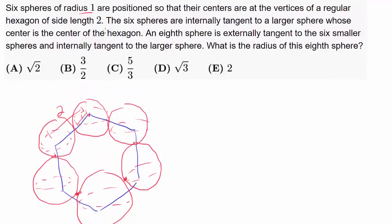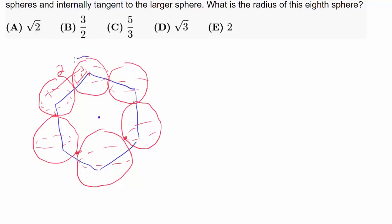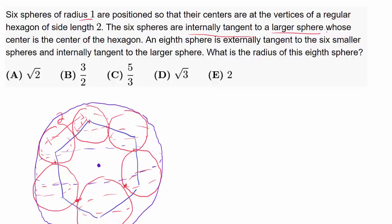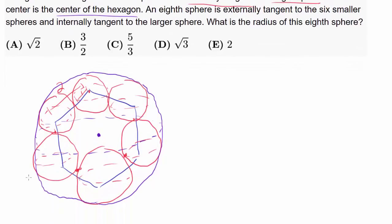The 6 spheres are internally tangent to a larger sphere whose center is at the center of the hexagon. So we have a larger sphere — let me label that — and this larger purple sphere is going to be tangent to every single one of the little red spheres. Because the center of the purple sphere equals the center of the hexagon, we can find its radius.